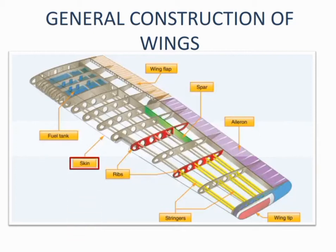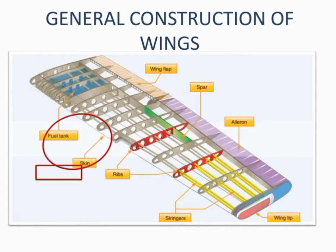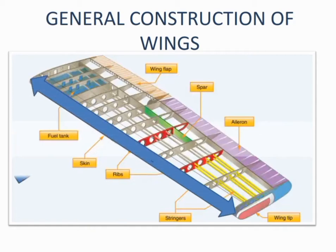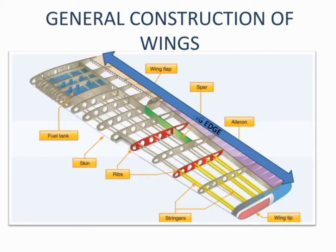The picture above shows the general construction of wings. Skin, ribs, stringers, and spars are the major components of wing construction. In most planes, the fuel tank is also located near the fuselage. The front edge of the wing where the wind touches is called the leading edge, and opposite to the leading edge there is the trailing edge.